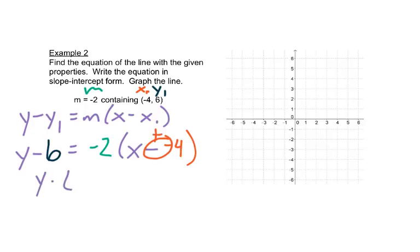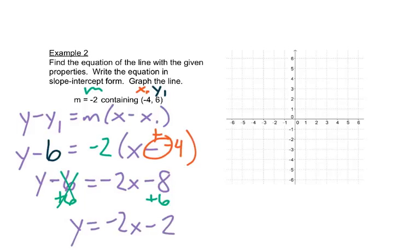Now we'll distribute. We have y minus 6 equals negative 2 times x is negative 2x. Negative 2 times a positive 4 is negative 8. We'll add 6 to both sides, and we get y equals negative 2x minus 2. So this is our slope-intercept form.